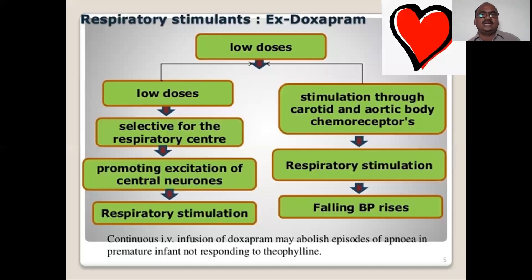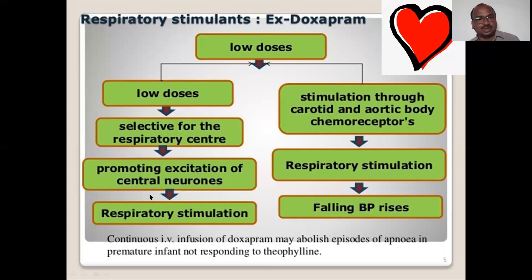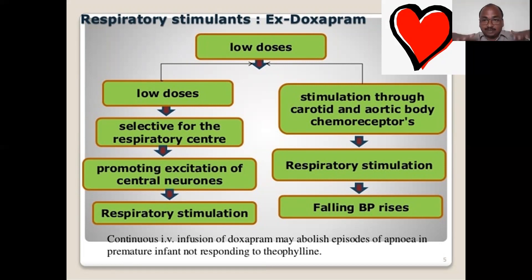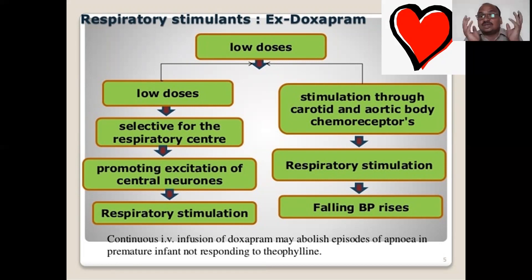At low doses only, all respiratory stimulants are selective for the respiratory center. They promote excitation of central neurons and respiratory stimulation occurs. The mechanism of action is stimulation through the carotid and aortic body chemoreceptors. When blood pressure has fallen, BP rises upon giving Doxapram — so it can be considered one of the medicines for low BP patients.